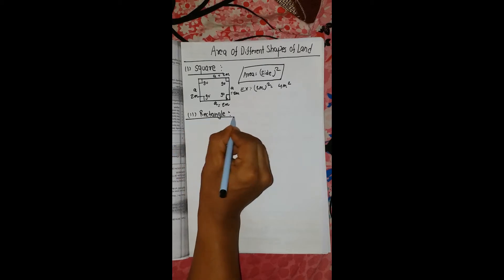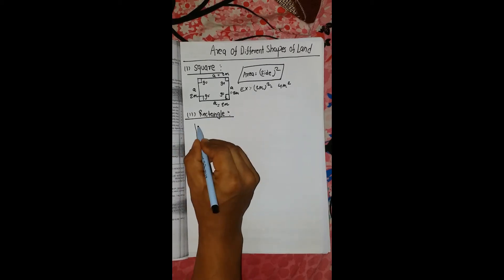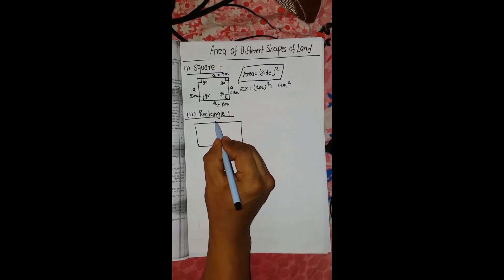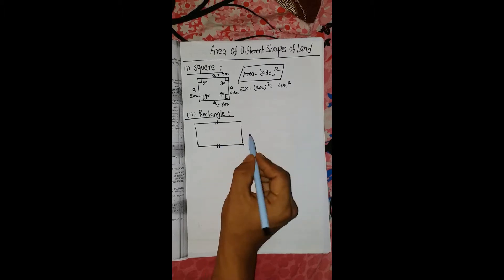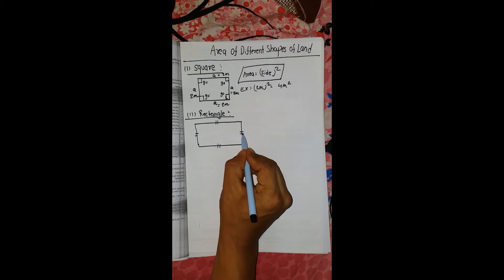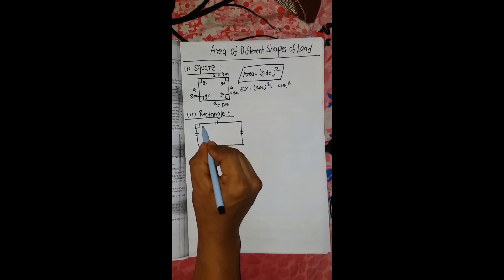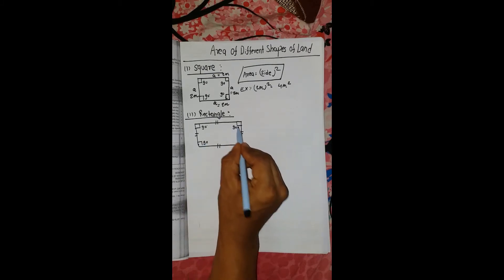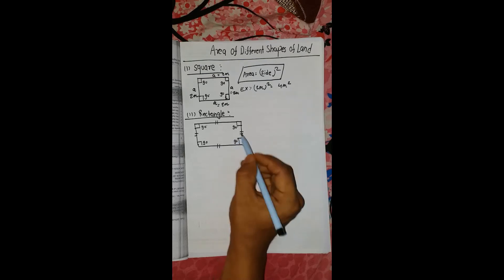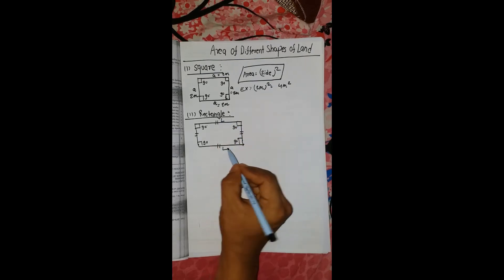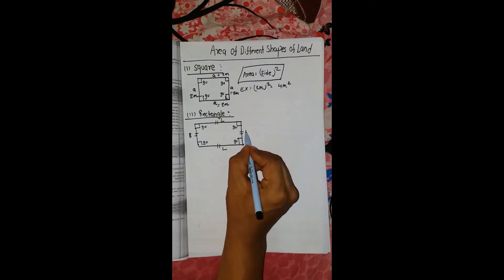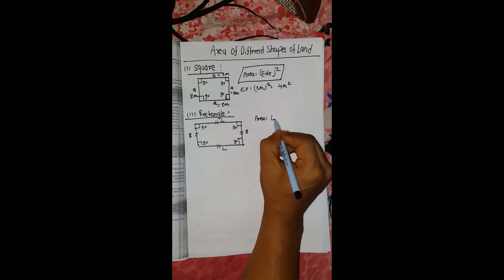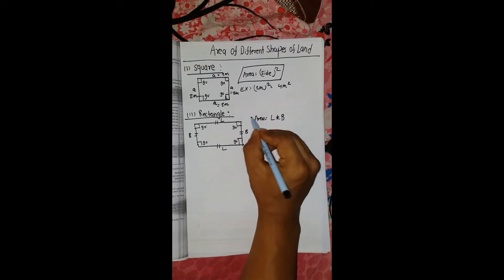For a rectangle, the key property is that opposite sides are equal. The angles are all 90 degrees — all four corners are 90 degrees. Suppose the length is L and the breadth is B. The area formula is: area is equal to L into B.